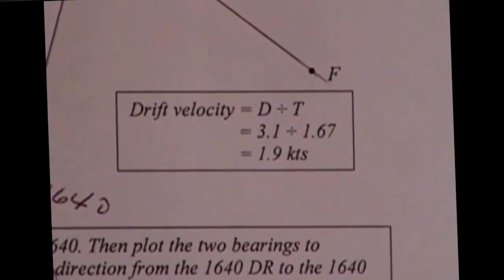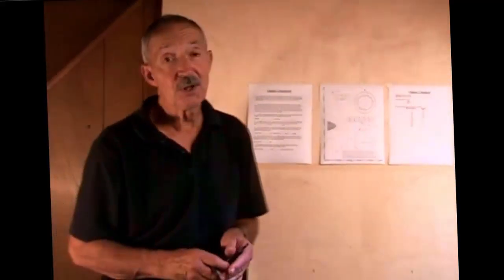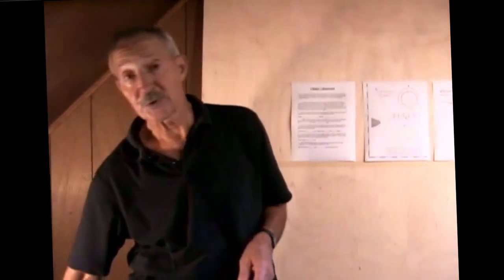And that is a type B current problem, where we take DR and take a fix and determine what the current was.